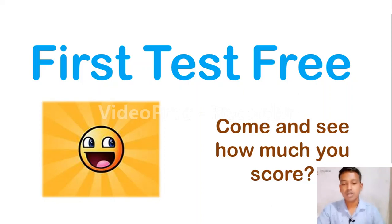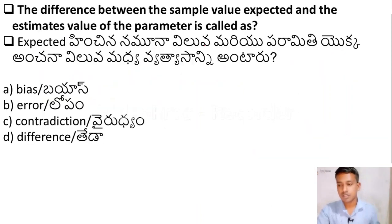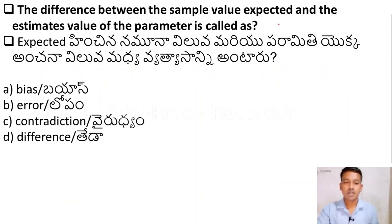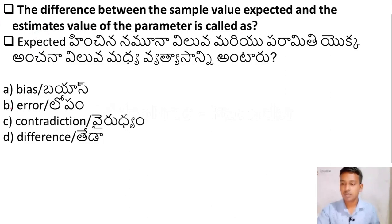The first question: the difference between the sample value expected and the estimated value of the parameter is called — Option A: Bias, Option B: Error, Option C: Contradiction, Option D: Difference.